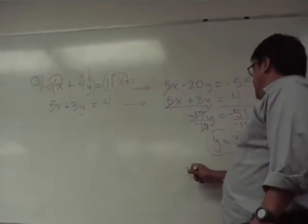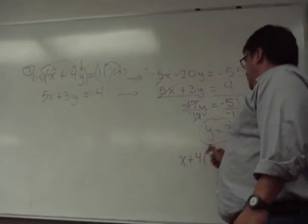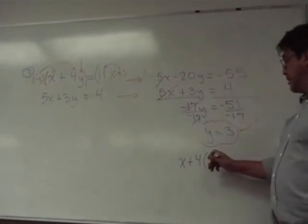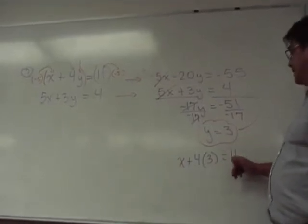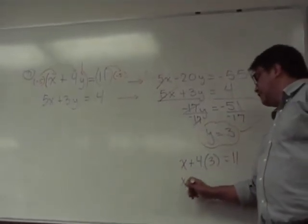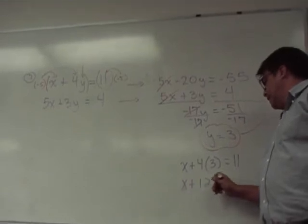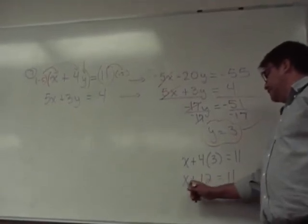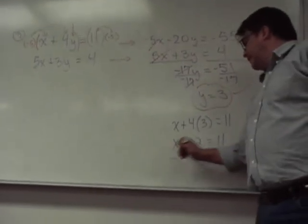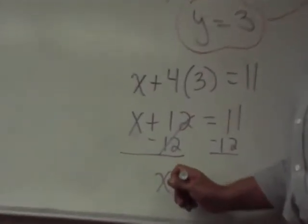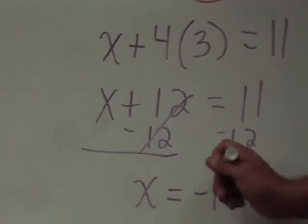x plus four y. The y is replaced now by the number three equals eleven. So, x plus twelve equals eleven. And if you subtract twelve from both sides of this equation, you get x equals negative one.